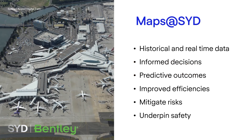The Sydney Airport Open Cities Digital Twin, known as Maps at Sid, is a gateway to historical and real-time data from multiple sources relating to our physical assets, enabling our people to make informed decisions, facilitate predictive outcomes, improve operational and asset efficiency, mitigate risks and underpin safety.